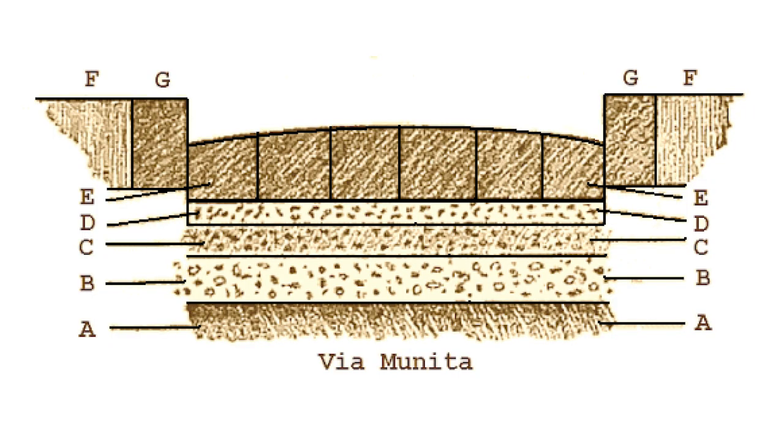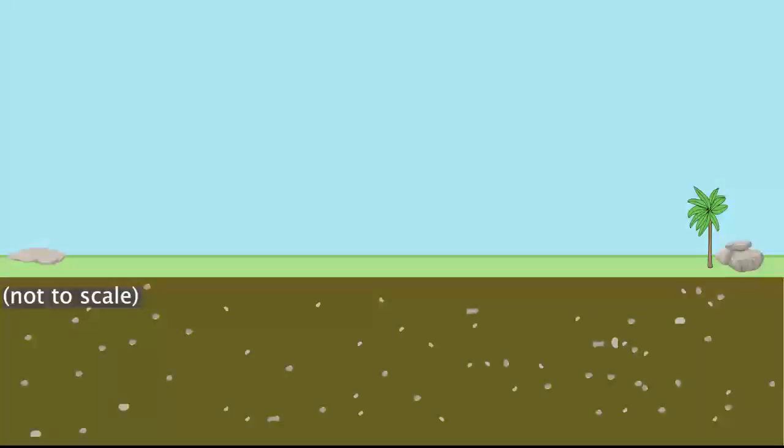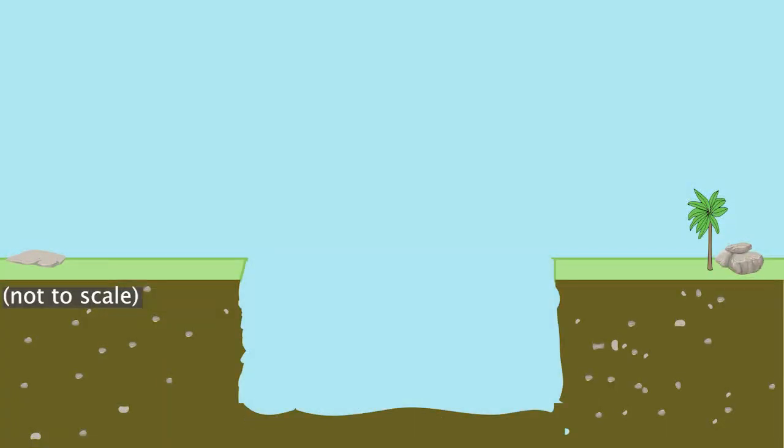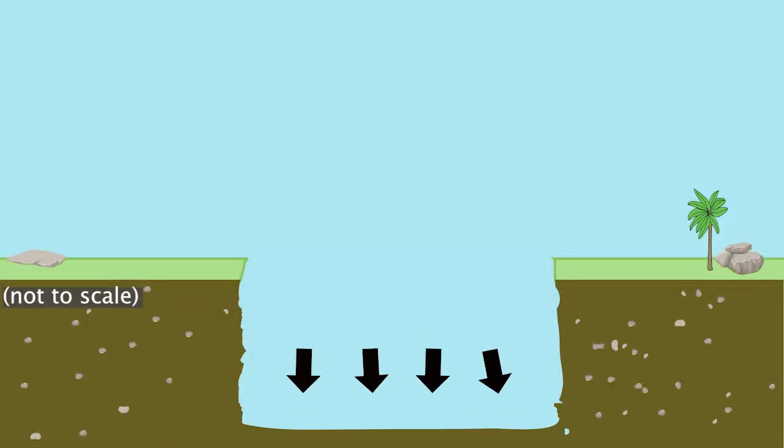These roads were called Via Munita, translating to Roman Way. For Via Munita, a trench was dug the length of the road. The bottom layer of dirt was tightly packed down. Stones were laid over the bottom layer of dirt, followed by a layer of pulverized rocks and lime.